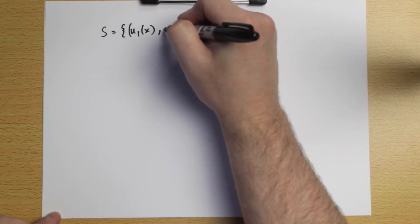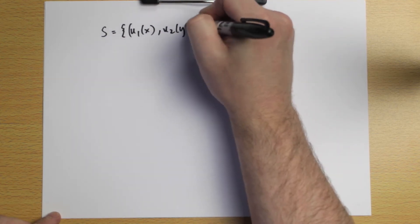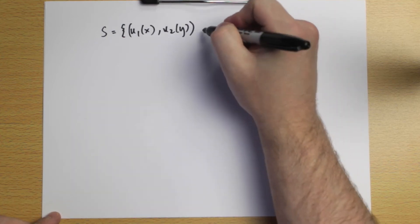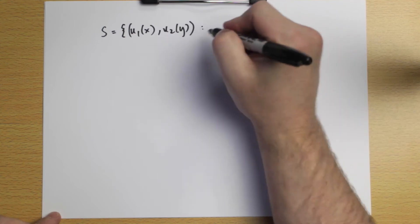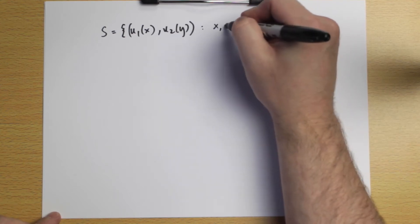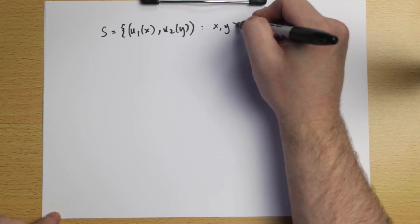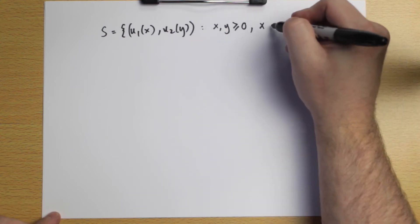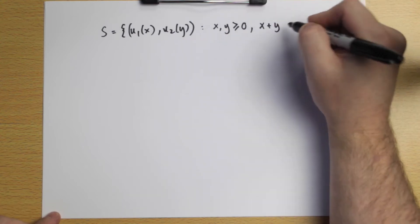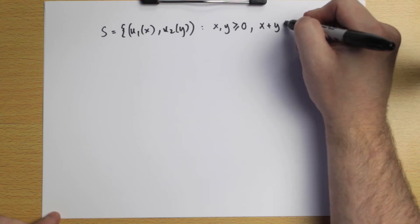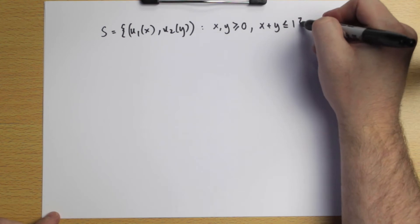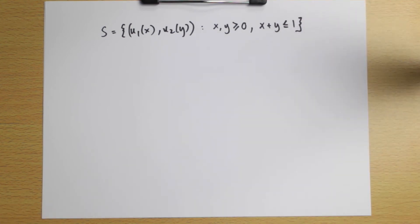It would be the set of pairs of utility numbers, U1 of X and U2 of Y, a utility for player one and a utility for player two. The conditions were that these amounts X and Y were amounts of money, both non-negative, and they summed up X plus Y to a fixed amount, less than or equal to one. So we're just dividing one dollar or one unit of any currency.